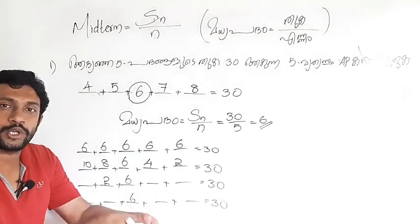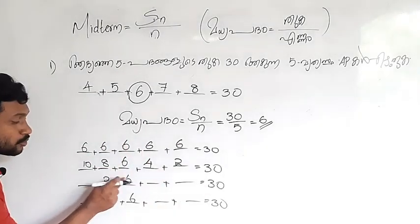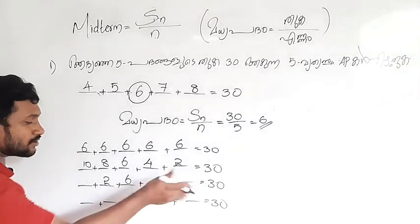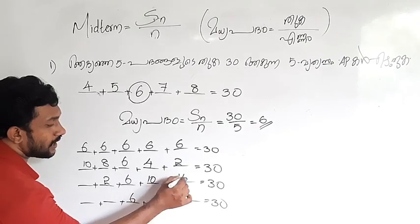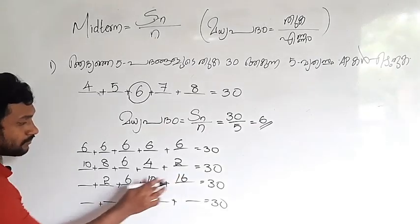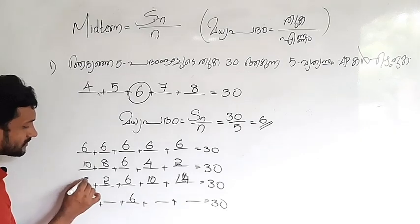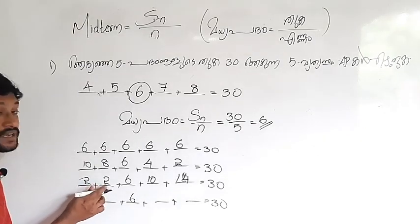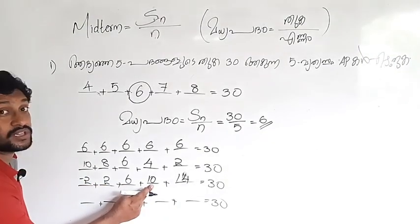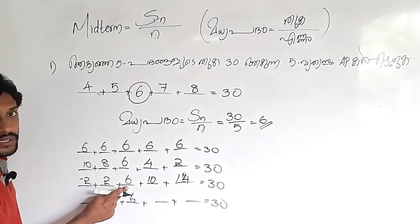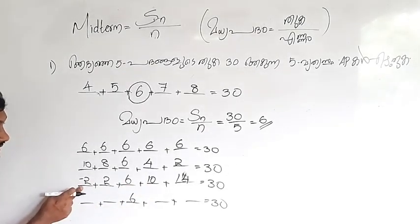Now you get 2, now you get 4. That 4 is equal to 4. 6, 4 is equal to 10, 14. 14 is equal to 6. Now you get minus 2. 2 and 4 is equal to minus 2. 5, 4 is equal to 24. 24 is equal to 6. 38 is equal to 32. 32 is equal to 32.